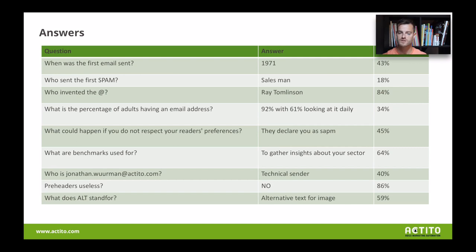More interesting is that 61% of them will have a look at it daily. Of course, I'm a wrong example because I work in this sphere. But if I look at my wife, she'll check her email probably four or five times a week, more than once. So it's about finding those right moments. Keep in mind: 92% of adults have an email, and 60% of them look at it on a daily basis, which is huge. That is the opportunity we need to work on.